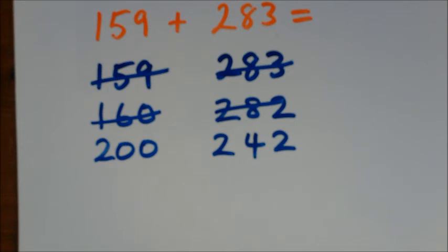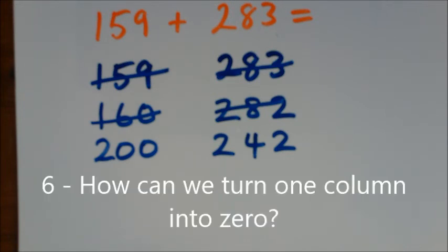We've nearly finished now. We've got two zeros. I think you could all do that final addition in your head, couldn't you? But just to follow the process through, we're actually going to turn one of the numbers into a zero. That column's number is going to become a zero. We keep working where we've already got two zeros. How do we get one of those columns just to be zero?